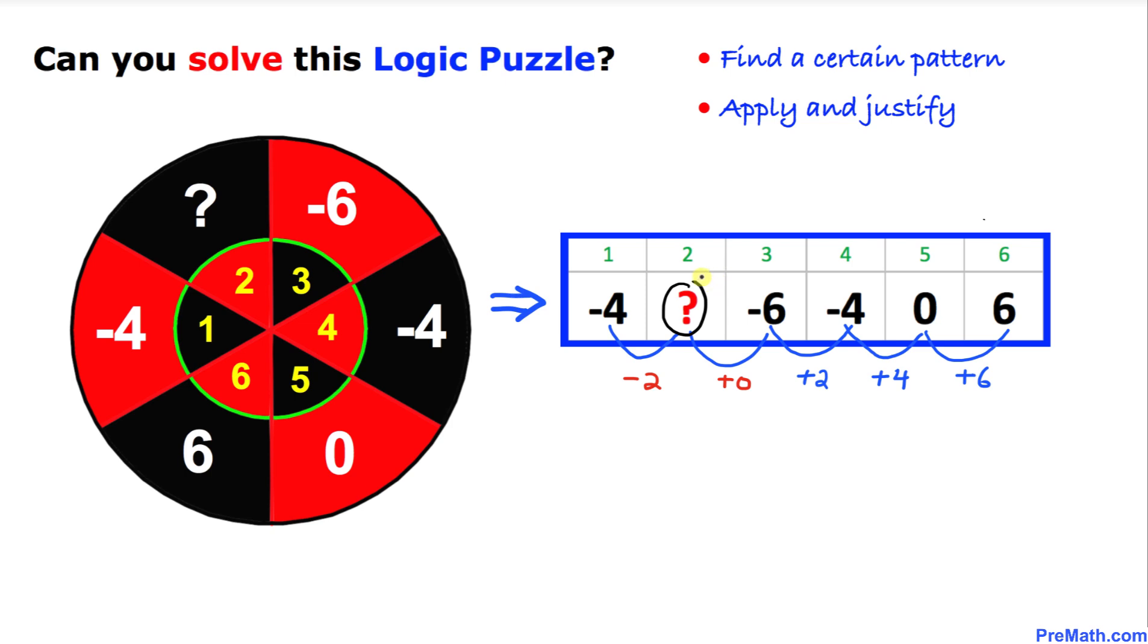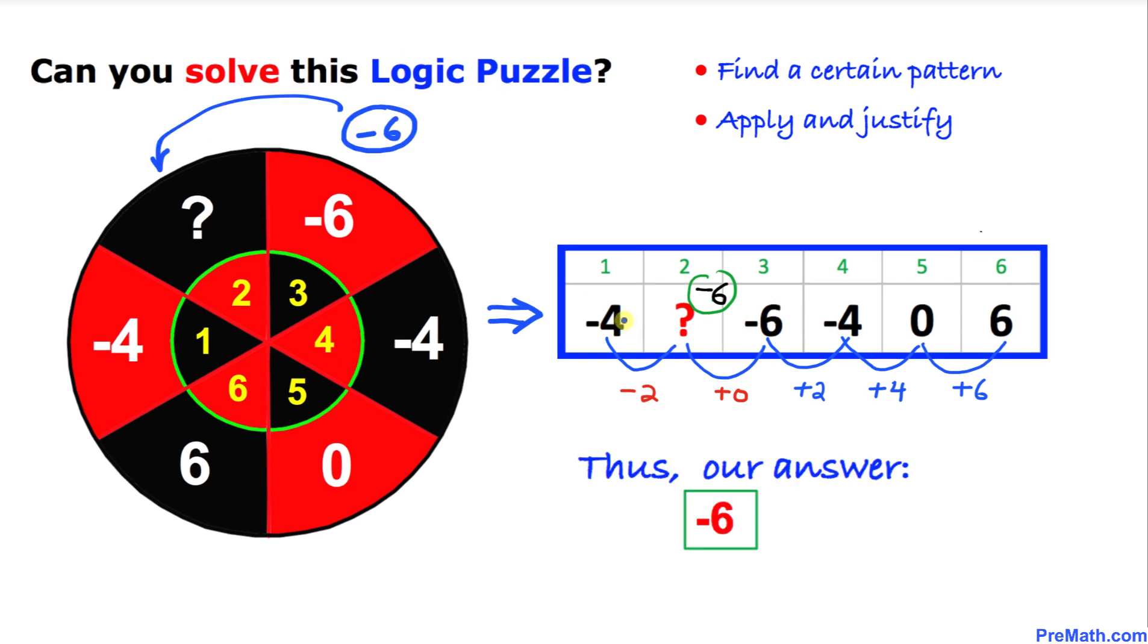Now let's go ahead and check. You can see -4 and then -2, that indeed makes it -6. And once again -6 plus 0 is going to give us of course -6. So thus our missing number turns out to be -6 and that is our final answer.